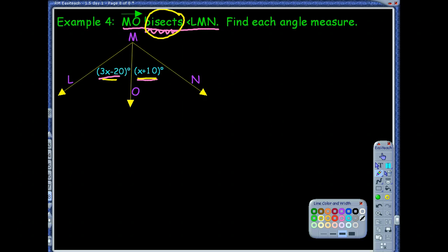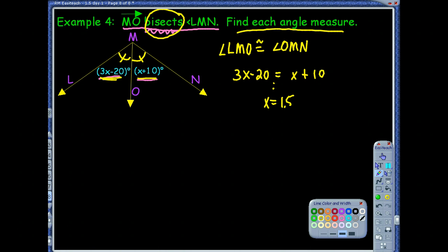Which angles are going to be congruent? So L-M-O and O-M-N. If I said that angle L-M-O is congruent to angle O-M-N, that basically means they have the same measure. So if they have the same measure, then the 3x minus 20 should equal our x plus 10, because those represent the measures of those two angles. And it says find each angle measure in this picture. If I solve this equation, you'd find that x is 15. Now, am I done? No, because that's not each angle. That's just x. If it says each angle measure, how many angles do we have in this picture? There's three. We have the two that are congruent, and then we have that larger angle L-M-N.